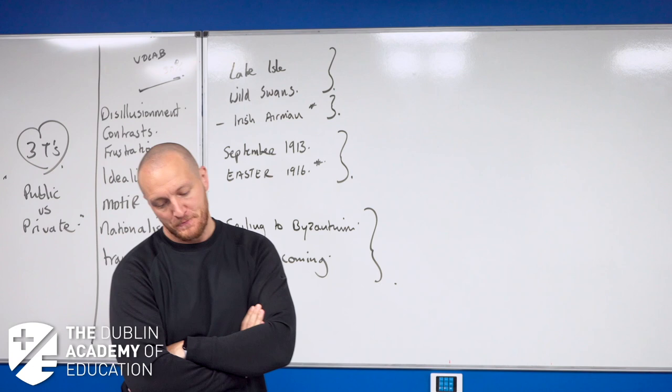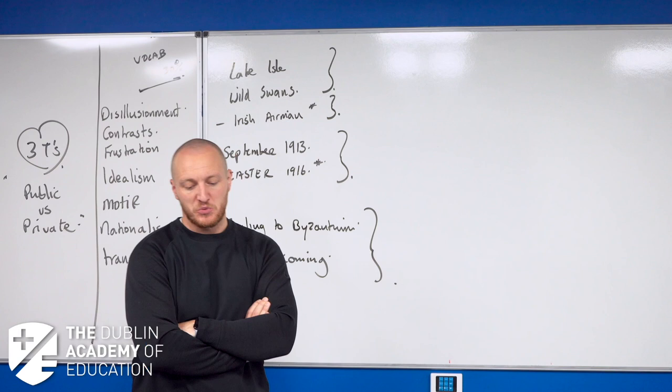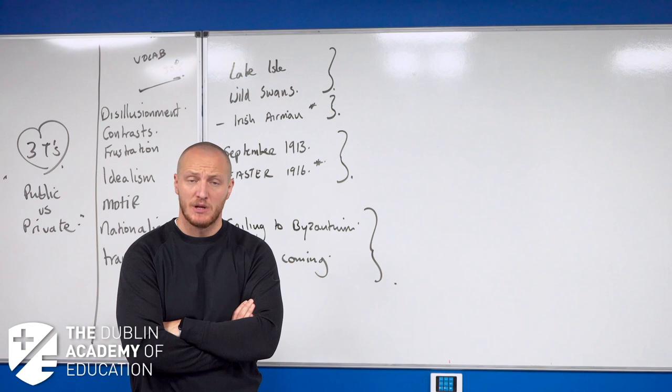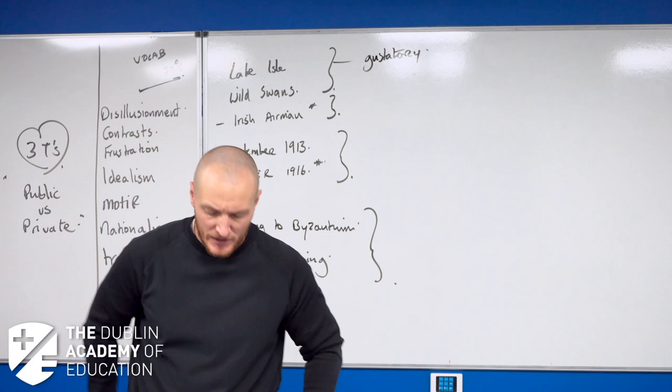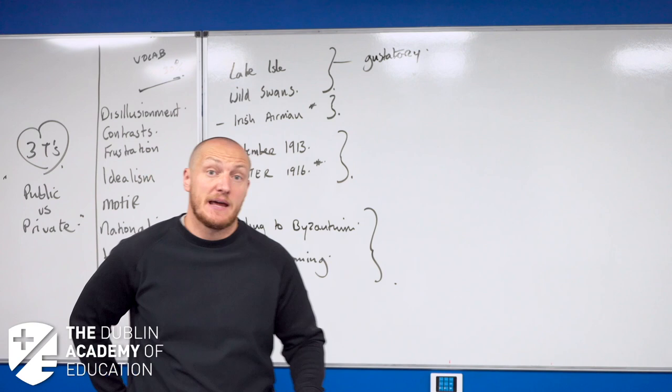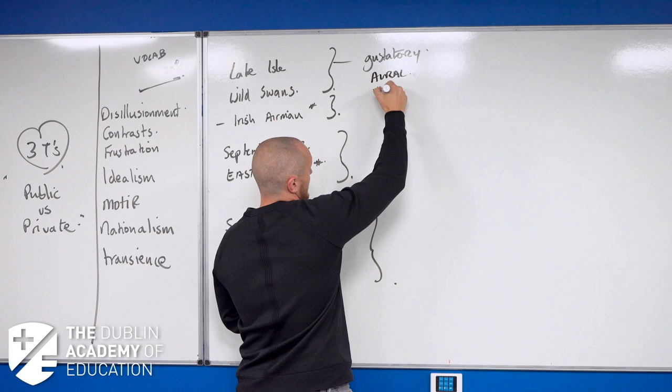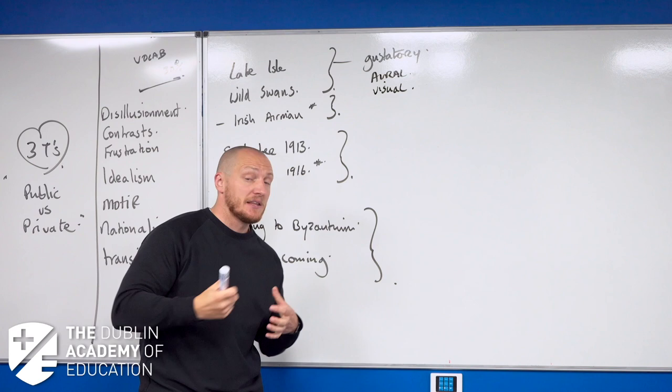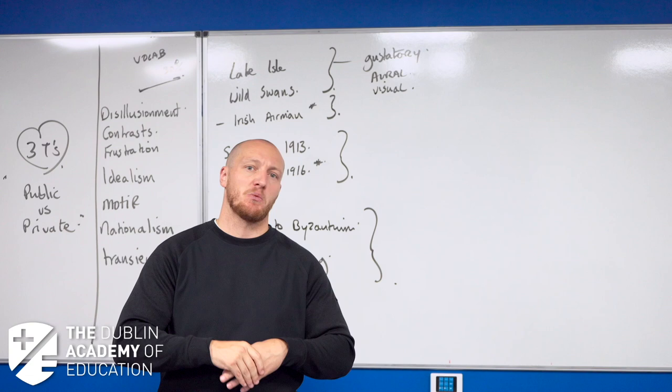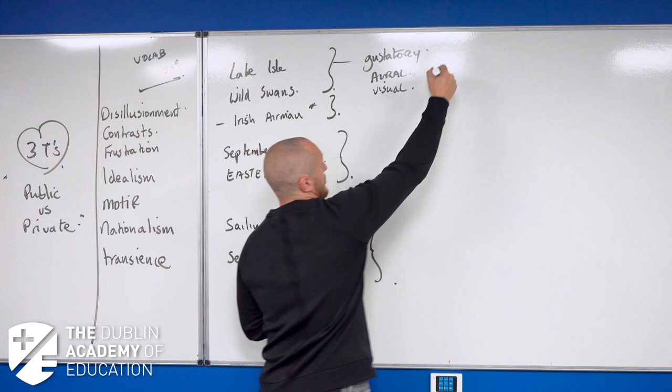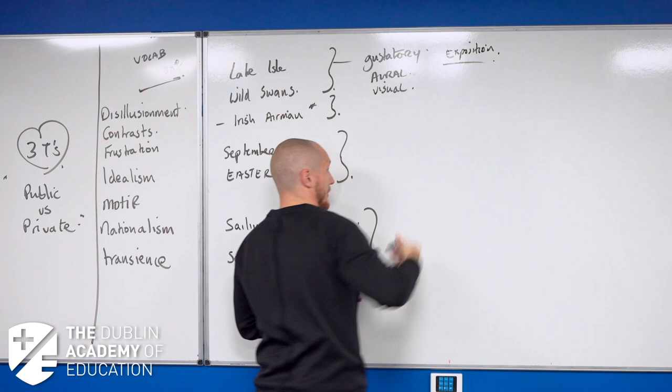Clay and wattles made, nine bean rows will I have there, a hive for the honeybee—so gustatory information, that's not often that gustatory information comes up in our sensory language. Gustatory with the bean rows, the honeybee, and 'live alone in the bee-loud glade'—yet more sensuous language there in terms of our aural quality. The wattle and daub house is visual, the beans and honey is gustatory, and the noise of the bees is aural. It's very sensuous, very detailed descriptive opening stanza. Yeats clearly wants us as readers to visualize the setting, the exposition. A huge amount of stylistic elements going on at the beginning of this poem.